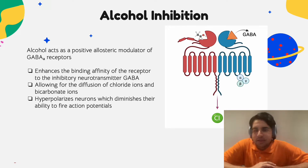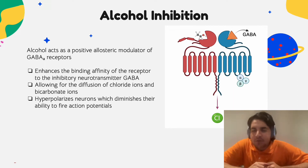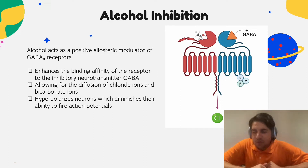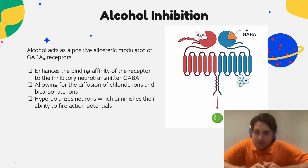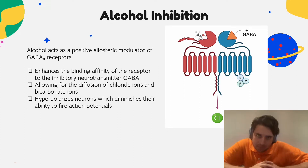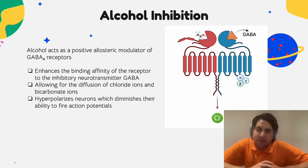How does alcohol interact with your brain and neurons in the first place? Basically, alcohol or ethanol molecules are very small, and even though they are polar they are allowed to pass through the blood-brain barrier. After getting to the neurons in your brain, they bind allosterically to GABA-A receptors, causing the receptor to have a higher affinity for its ligand, GABA.